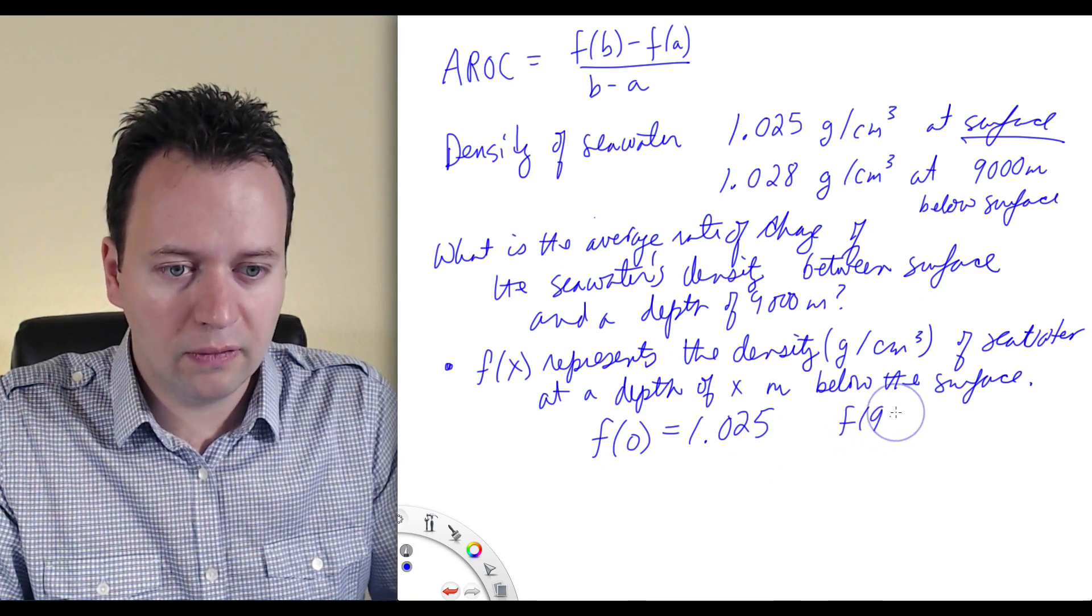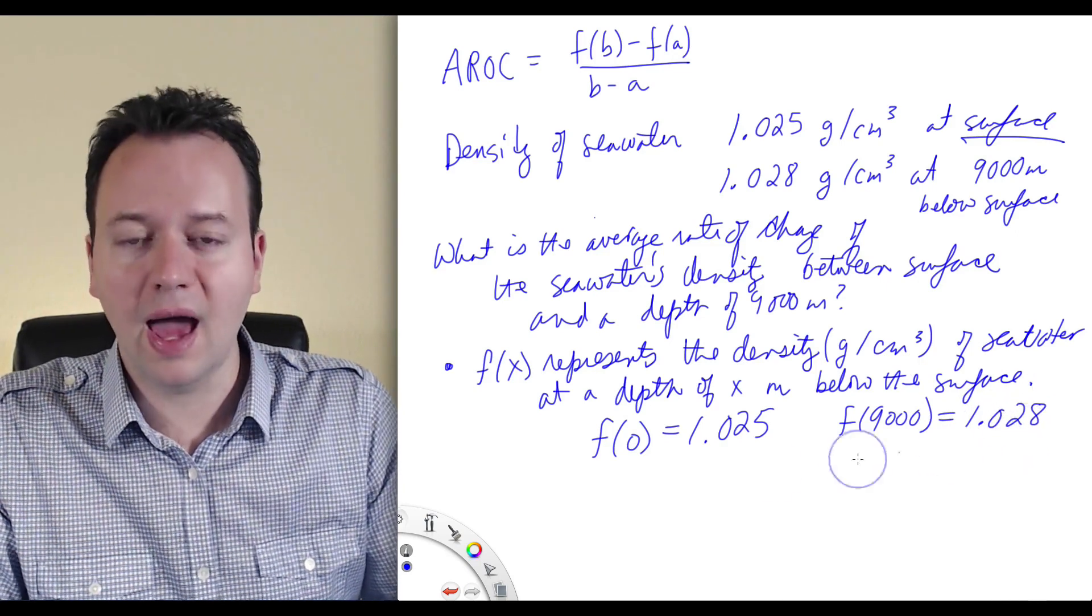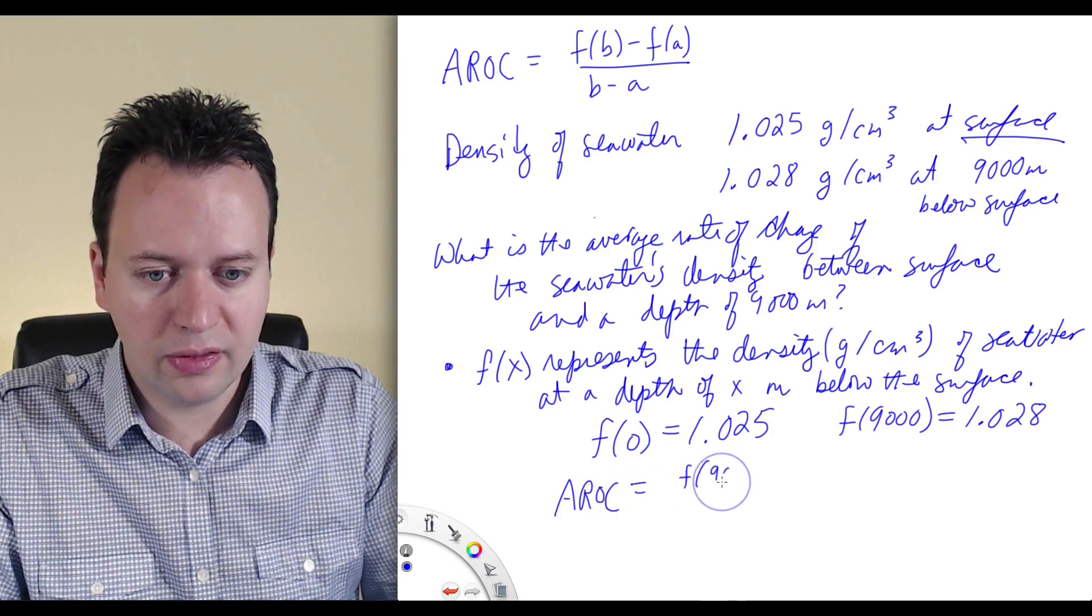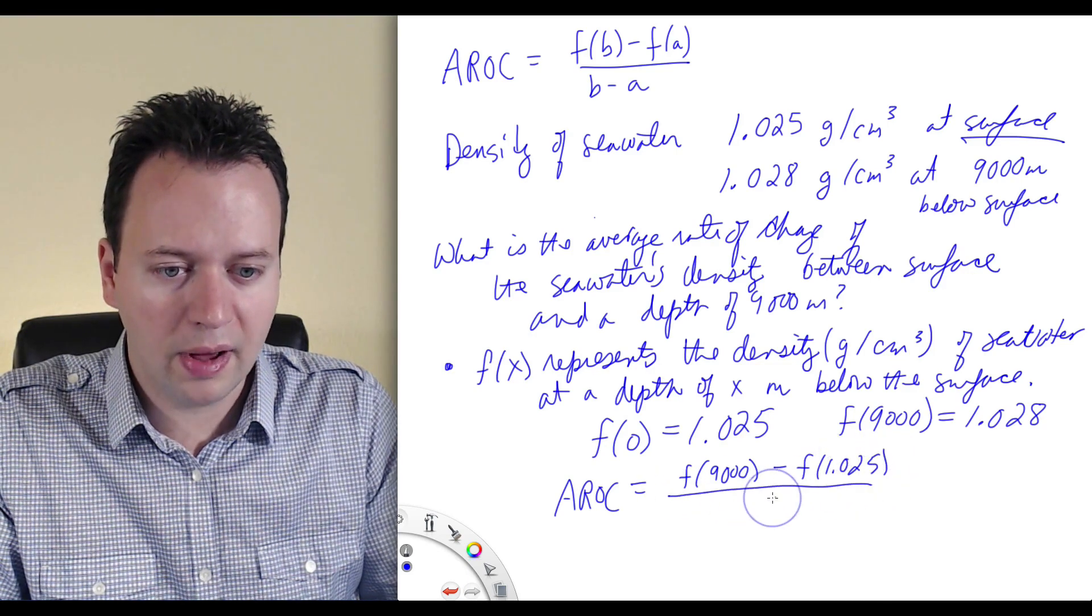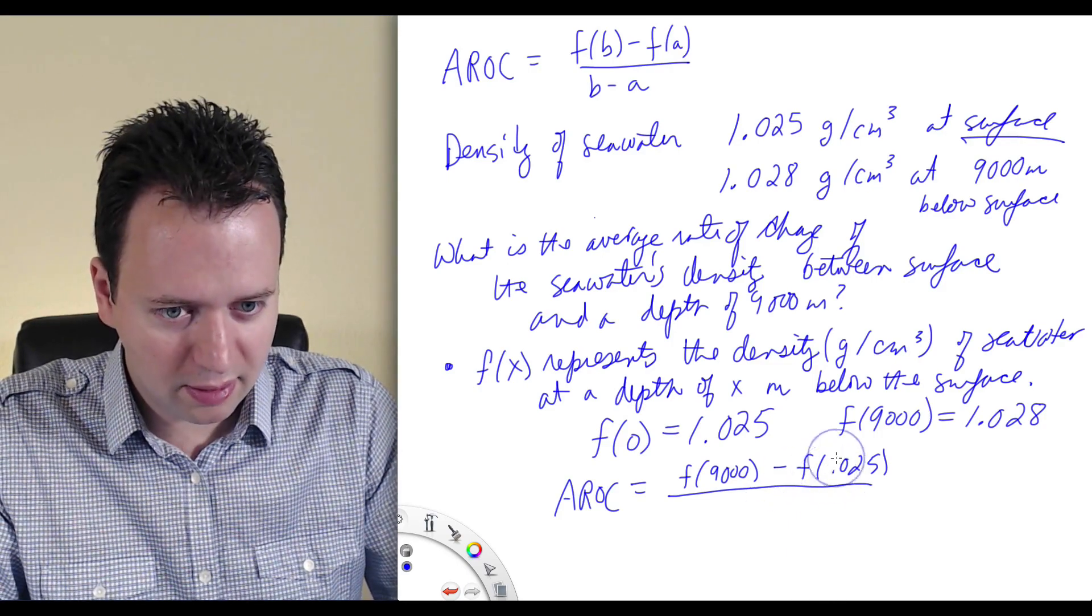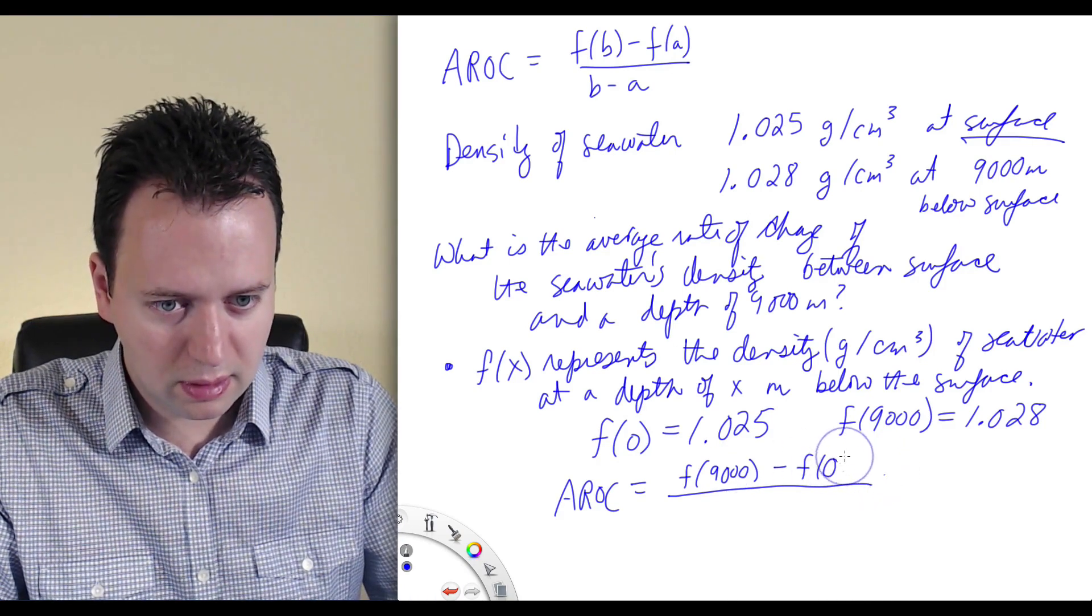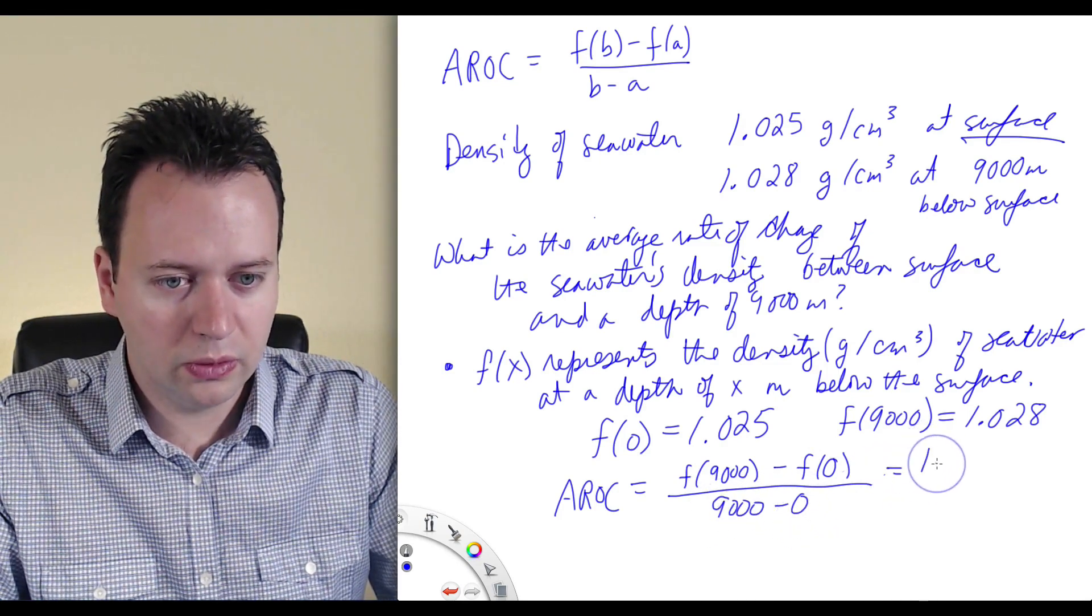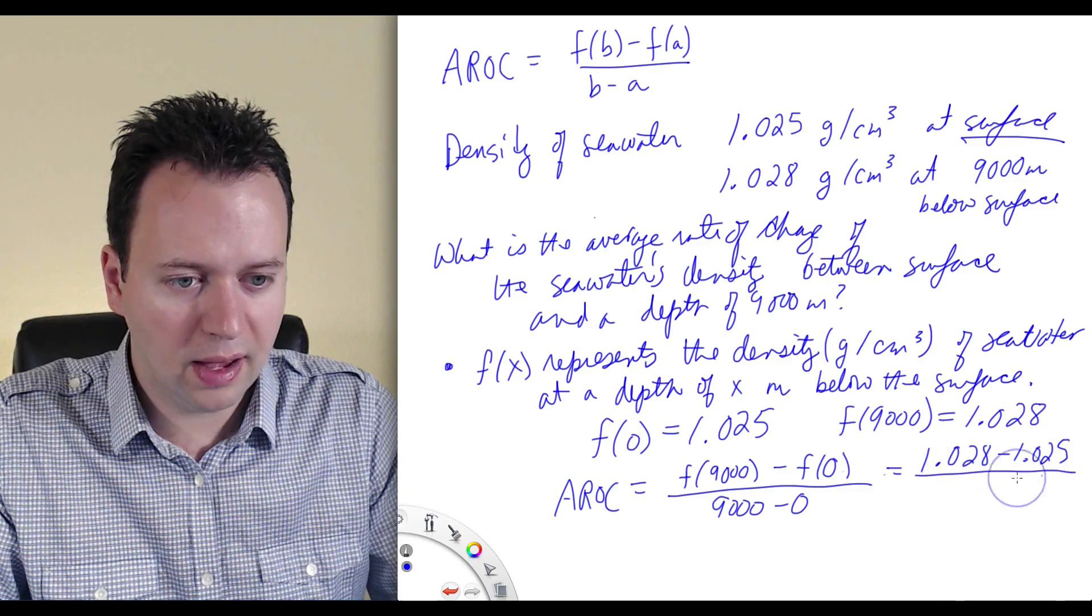And then f of 9,000 is going to be 1.028. So the average rate of change is going to be f of 9,000 minus f of 0. So this is equal to 1.028 minus 1.025 divided by 9,000.